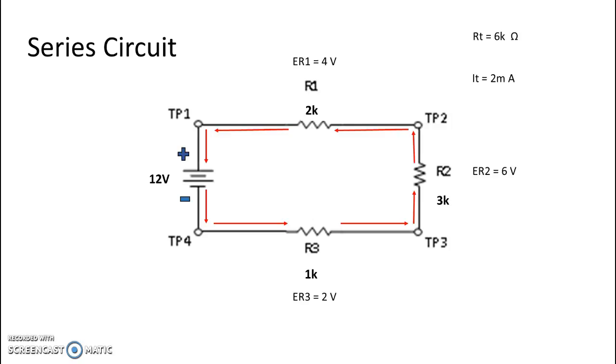You will notice on the screen that all the original values that we've been using for the last two videos are already up. So total resistance of 6k ohms, total current of 2 milliamps, and the voltage drops for R1, R2, and R3. R1 is 4 volts, R2 is 6 volts, and R3 is 2 volts.